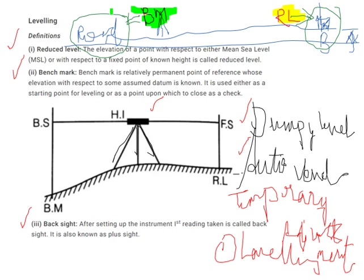Then we have a benchmark. A benchmark is again related to some reference point — it may be related to mean sea level (MSL) or anything else. We have many types: temporary benchmarks, permanent benchmarks, GTS benchmarks, and GPS benchmarks. These benchmarks are reference points. By definition, a benchmark is a relatively permanent point of reference whose elevation with respect to some datum is known.